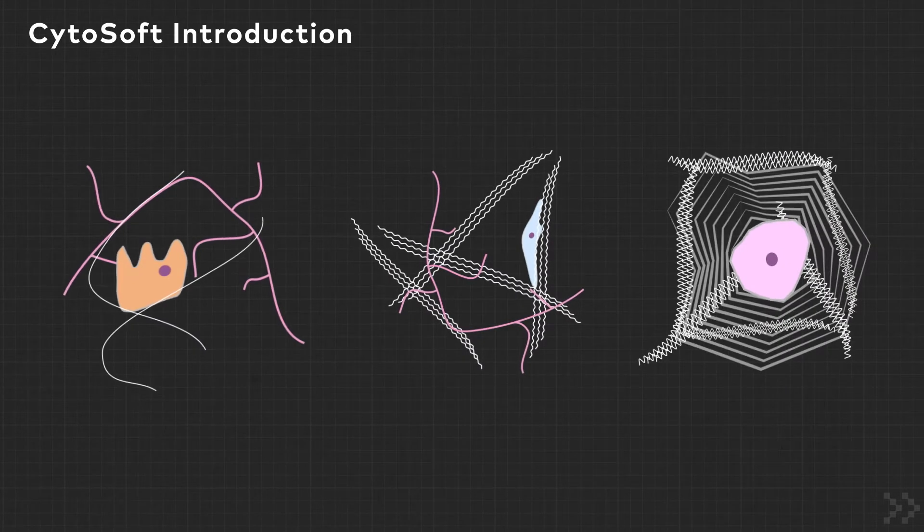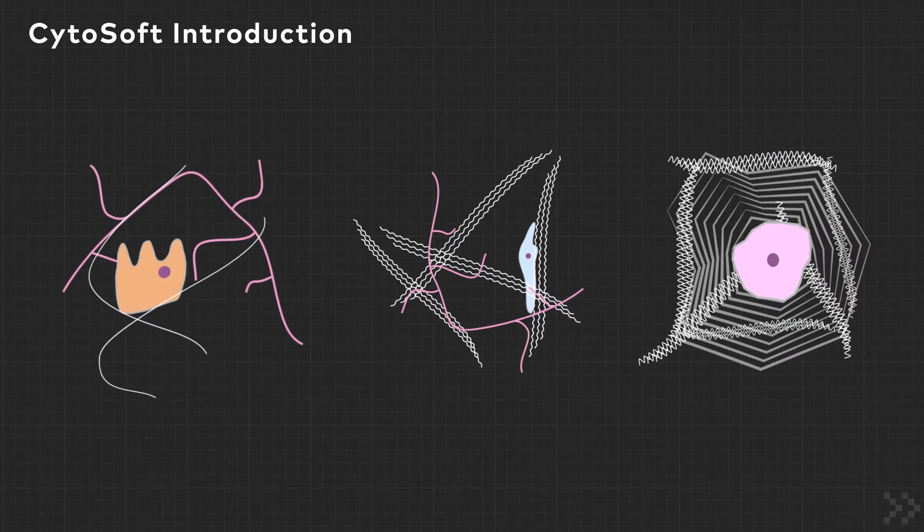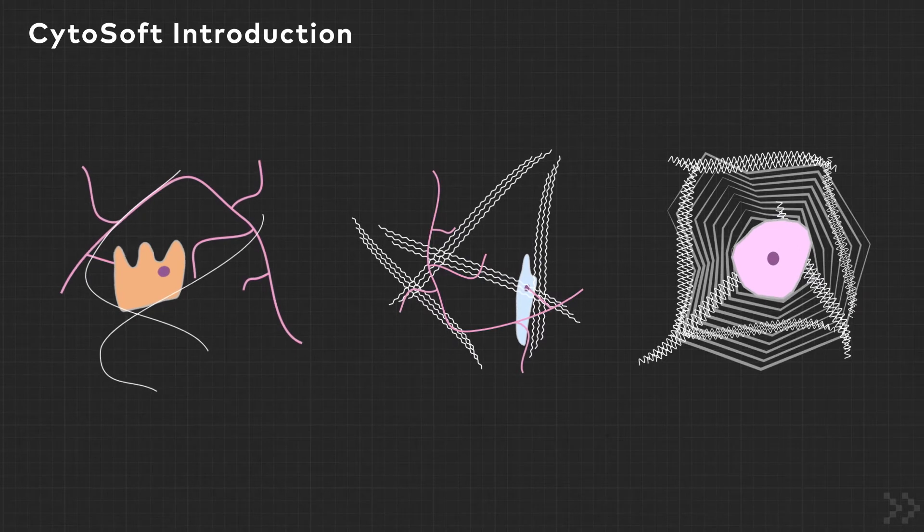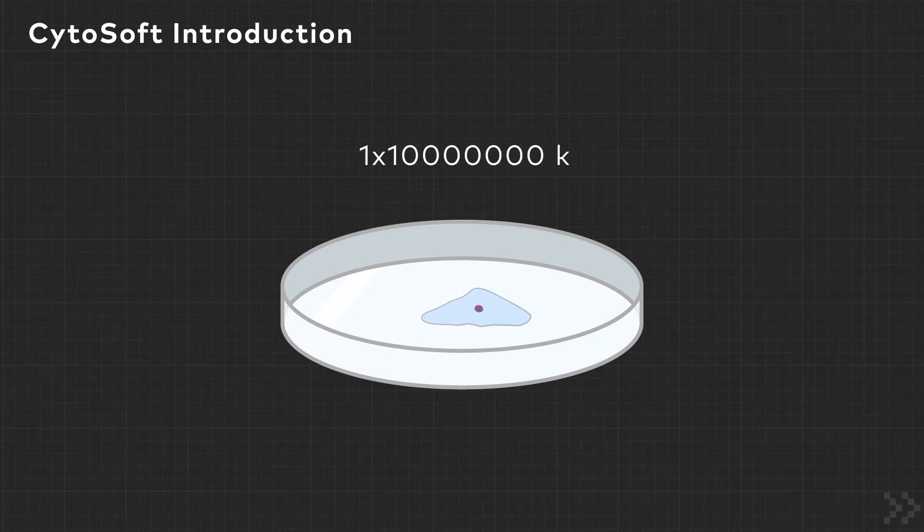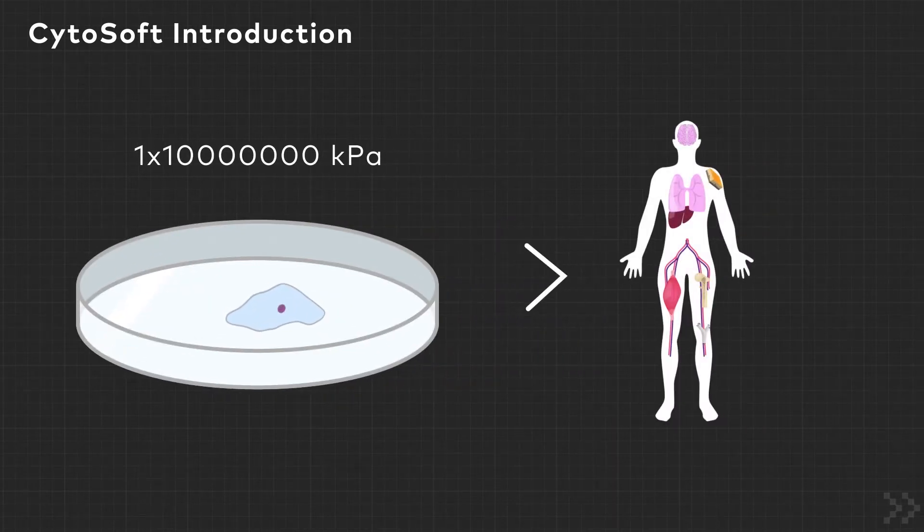Cells receive critical information for their structure and function simply from the stiffness of the surrounding matrix. Tissue culture plasticware has an elastic modulus of approximately 1 times 10 to the 7th kilopascals, which is significantly stiffer than most tissues in the body.